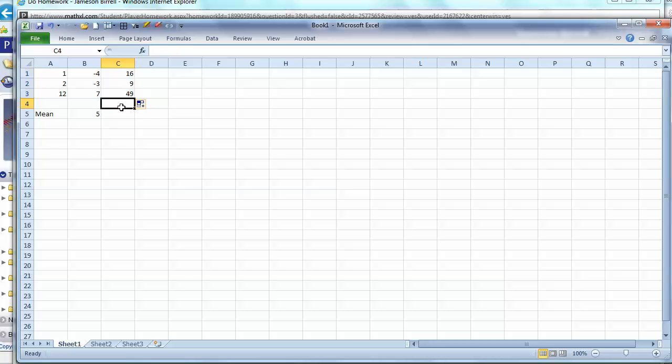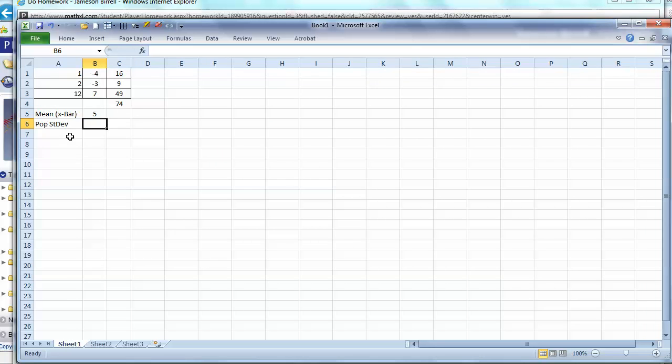So what are we supposed to do? Then we need all our squares. Then we need that sum. Now we can calculate the population standard deviation by taking square root of that sum of the squares of the deviations divided by the total number of items, which we have, 3. And there's our 4.96666667.